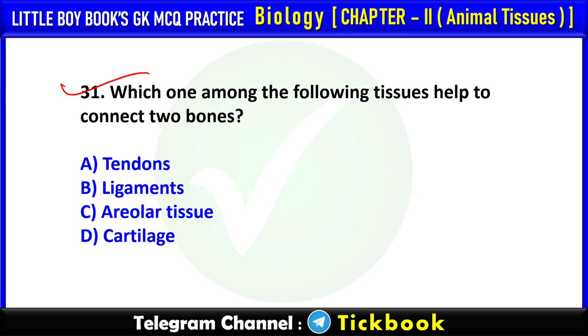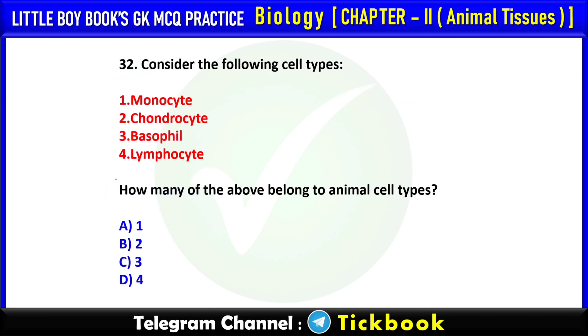Q31. Which one of the following tissues helps to connect two bones? Option number B: Ligaments.